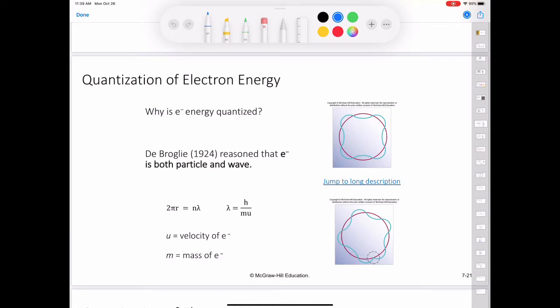Standing waves can be generated by plucking, say, a guitar string. The waves are described as standing or stationary because they do not travel along the string. Some points on the string called nodes do not move at all. That is, the amplitude of the wave at these points is zero. There is a node at each end and there may be nodes between the ends.